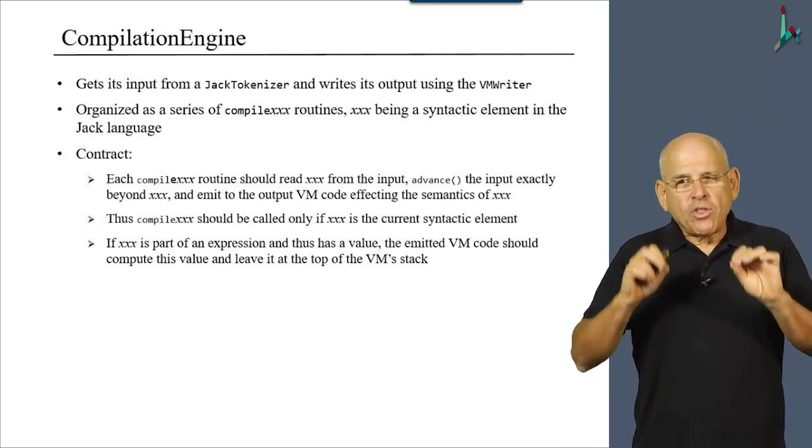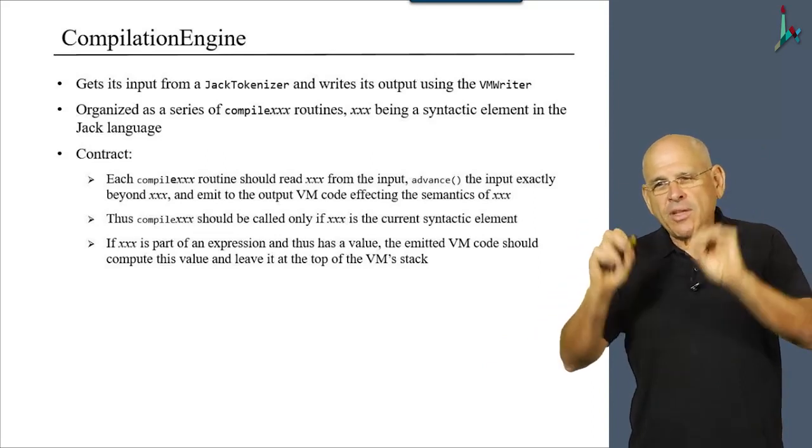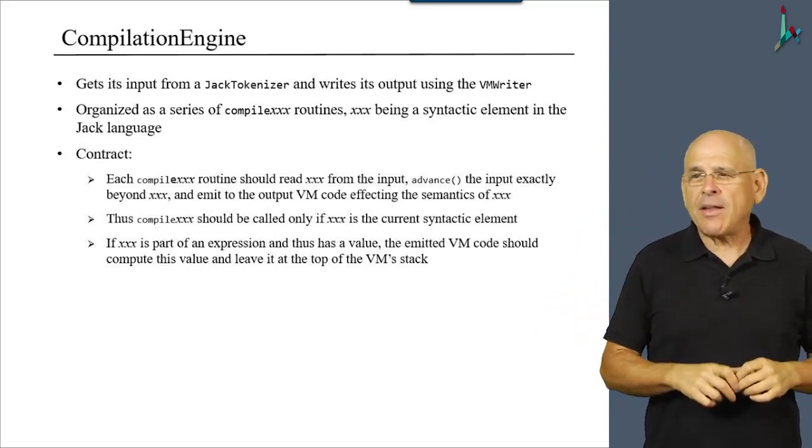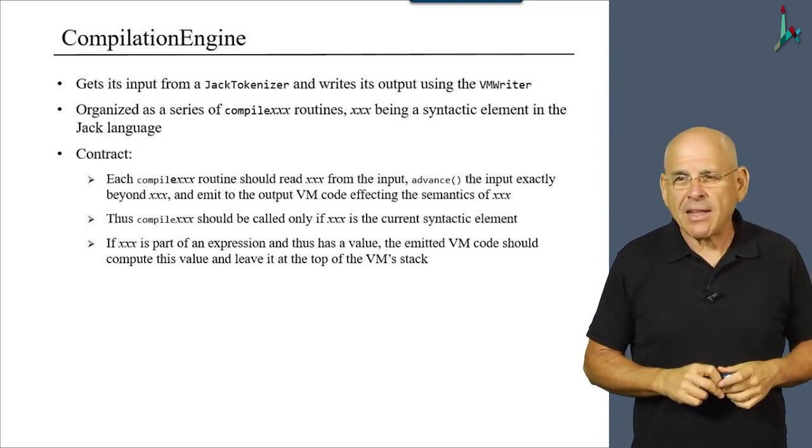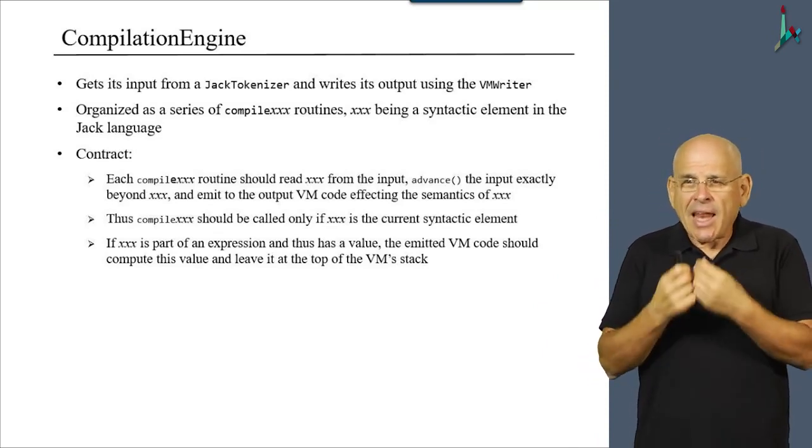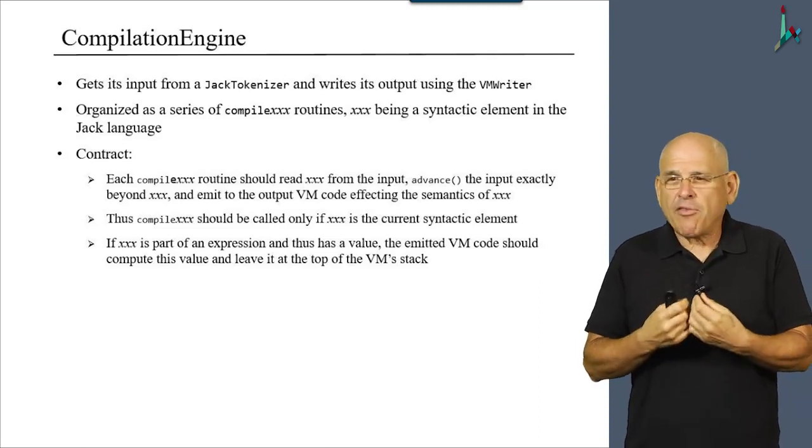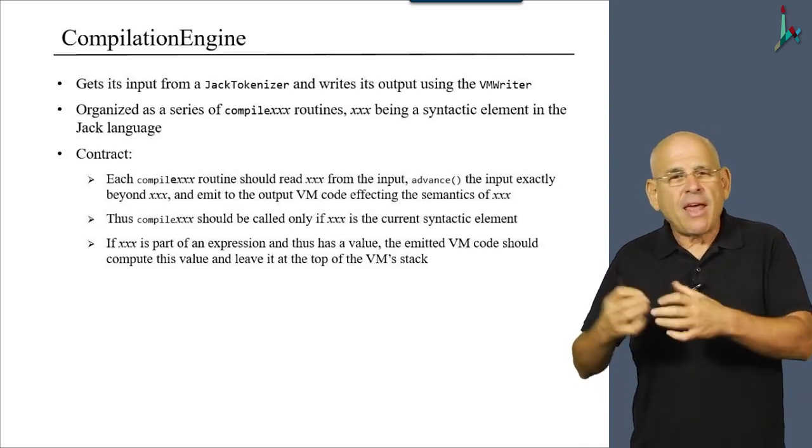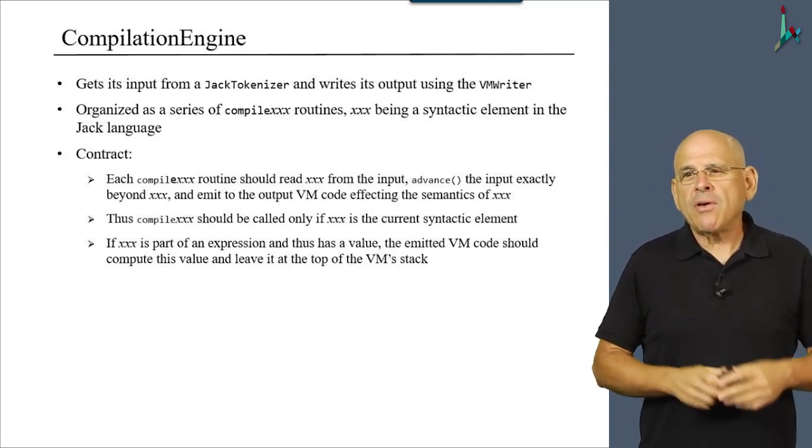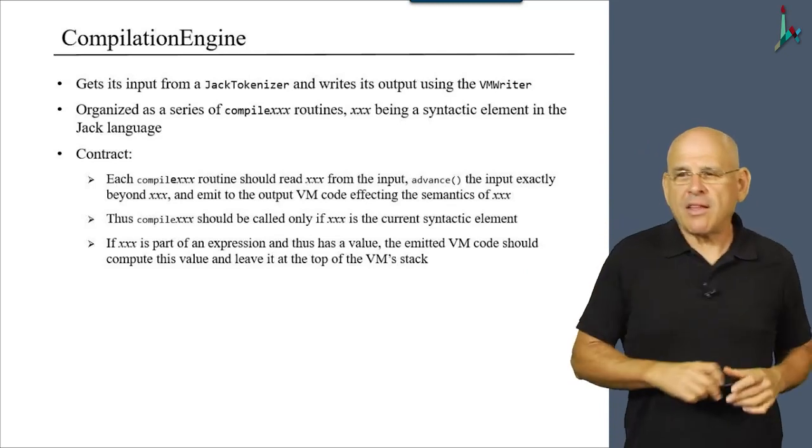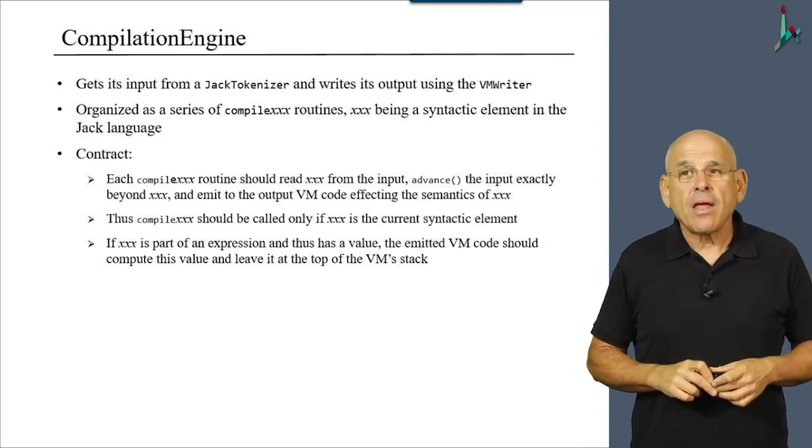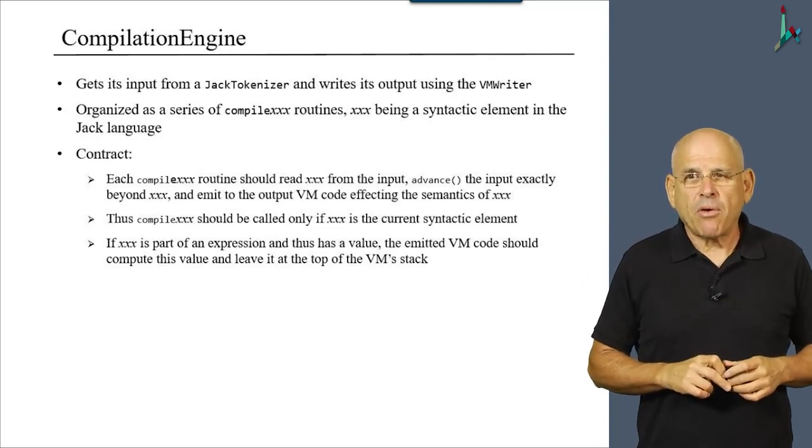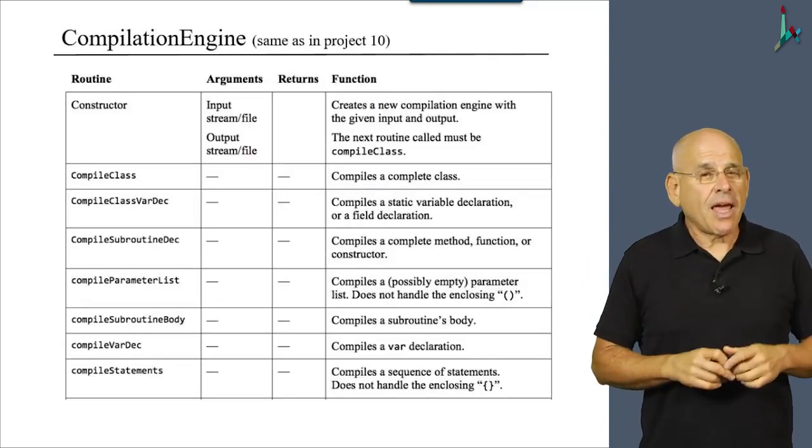Therefore, we should call this compileRoutine only if XXX is indeed the current syntactic element that we are handling. Now, if this element is part of an expression and therefore it's something that should have a value, then the emitted VM code should compute this value and put it at the top of the VM stack. So, that's what the compilation engine is supposed to do. It does it using this API.